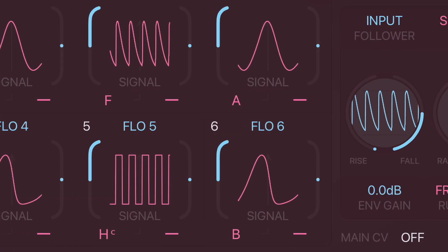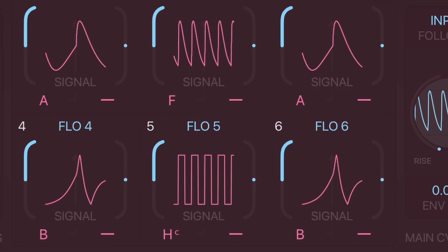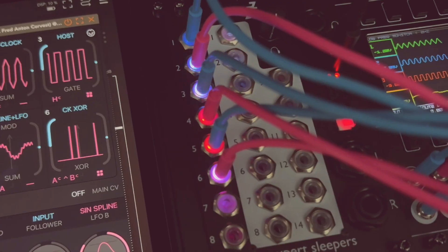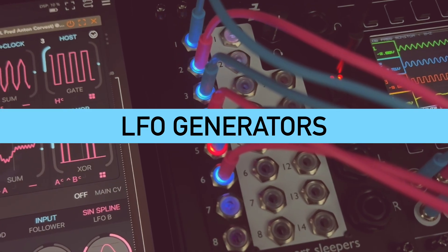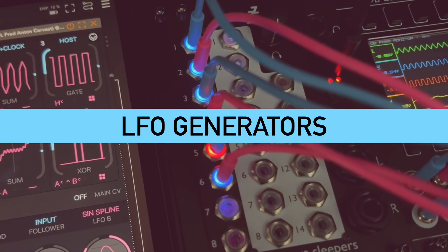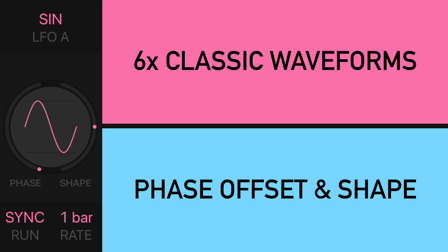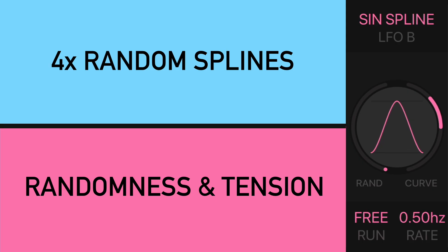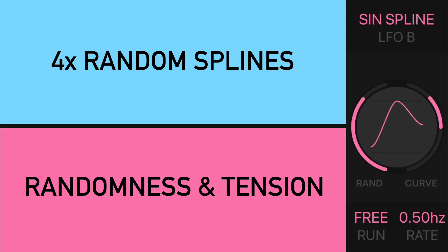The plugin is built around diverse modulation generators, and offers two flexible low frequency oscillators that can run freely or sync to your host. Each LFO offers six classic waveforms with adjustable phase and shape controls, and additional freeform line-based shapes with controllable randomness and curve tension.